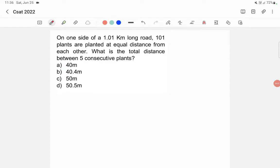On one side of a 1.01 kilometer long road, 101 plants are planted at equal distance from each other. What is the total distance between five consecutive plants? Before answering this question, you need to know one thing.